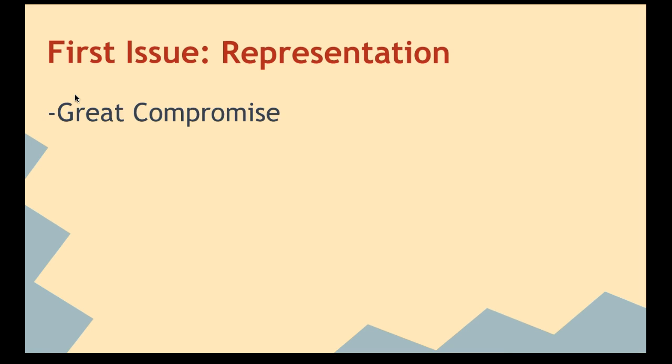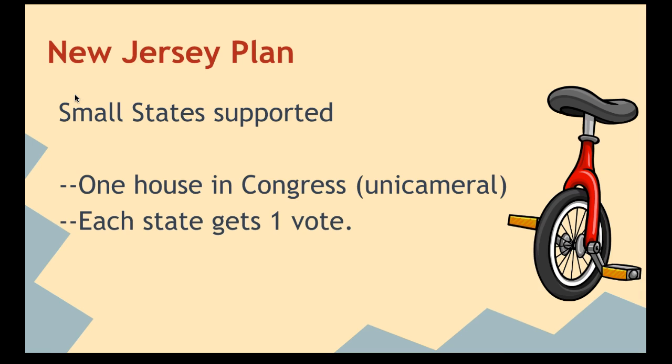They're going to ultimately come up with what's called the Great Compromise, and that is made up of two types of plans that they started with.